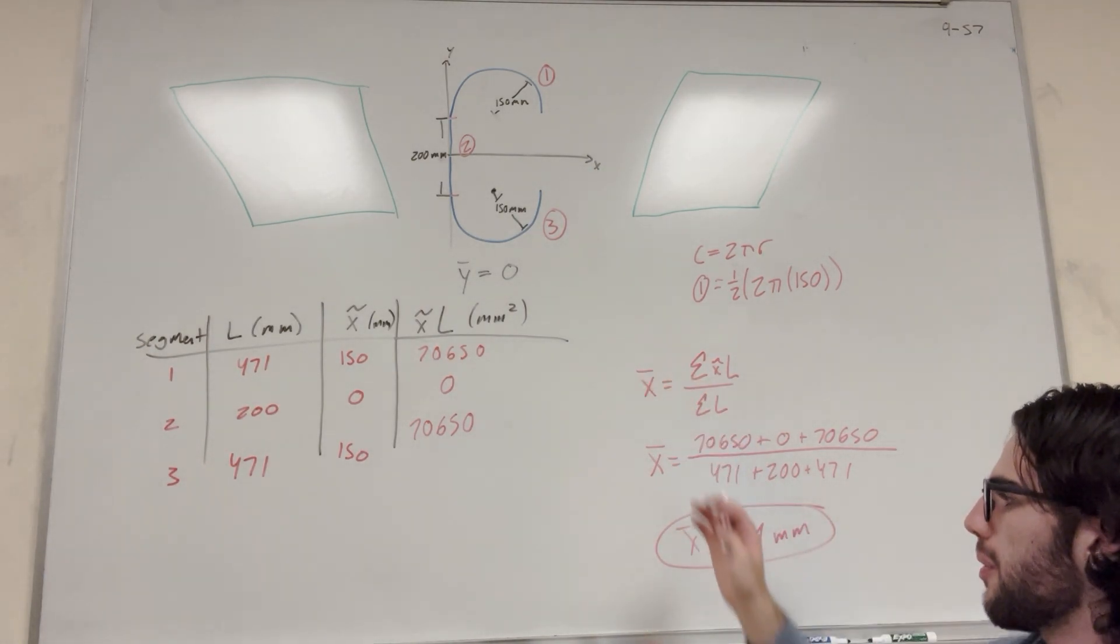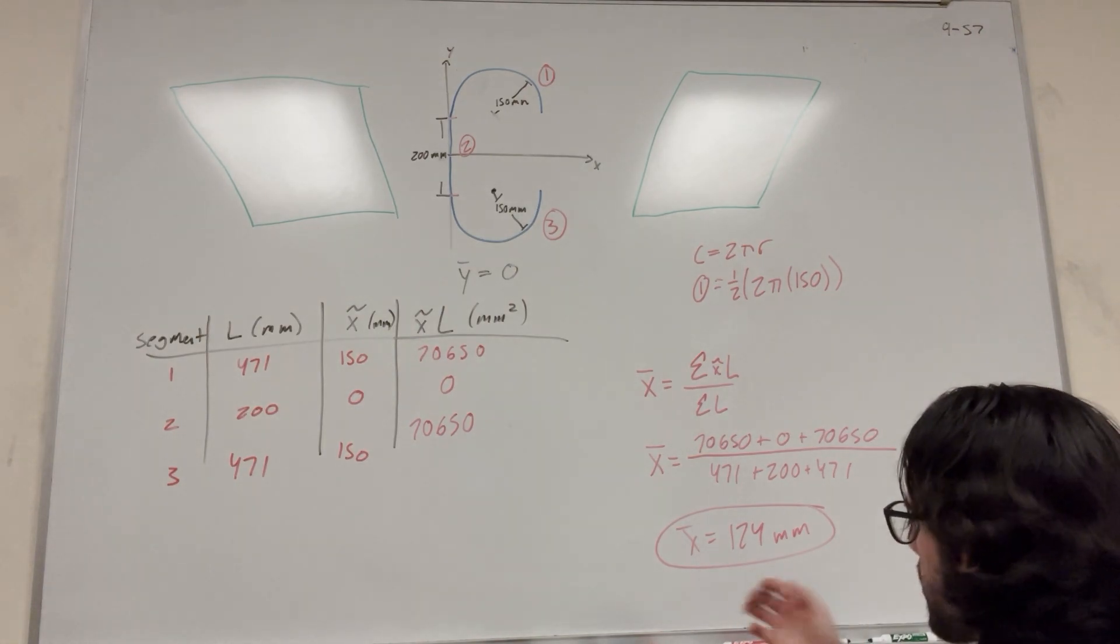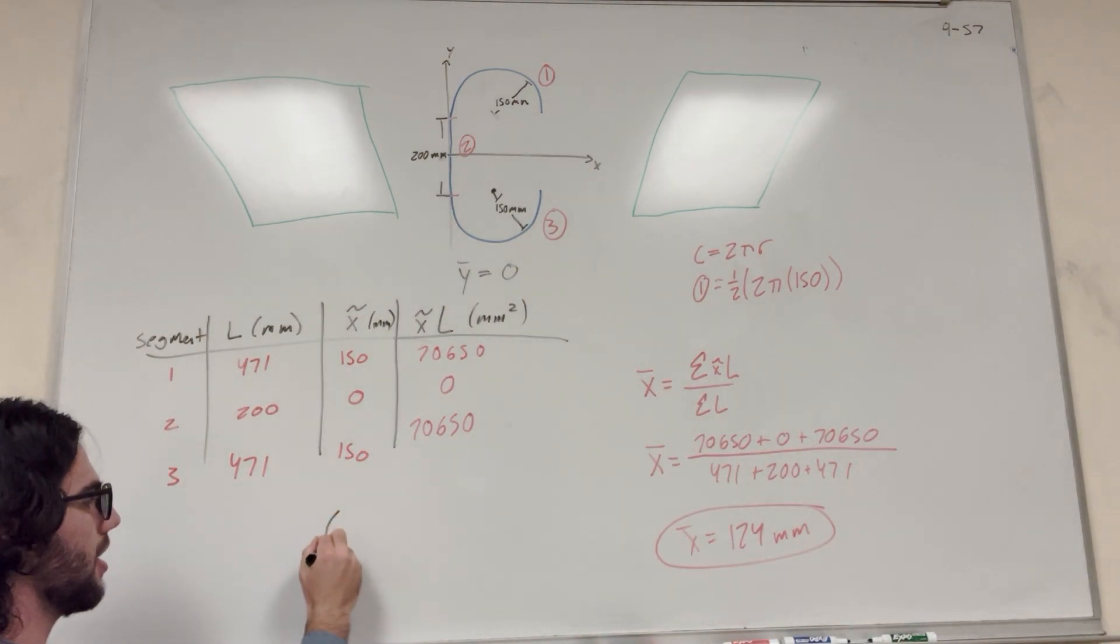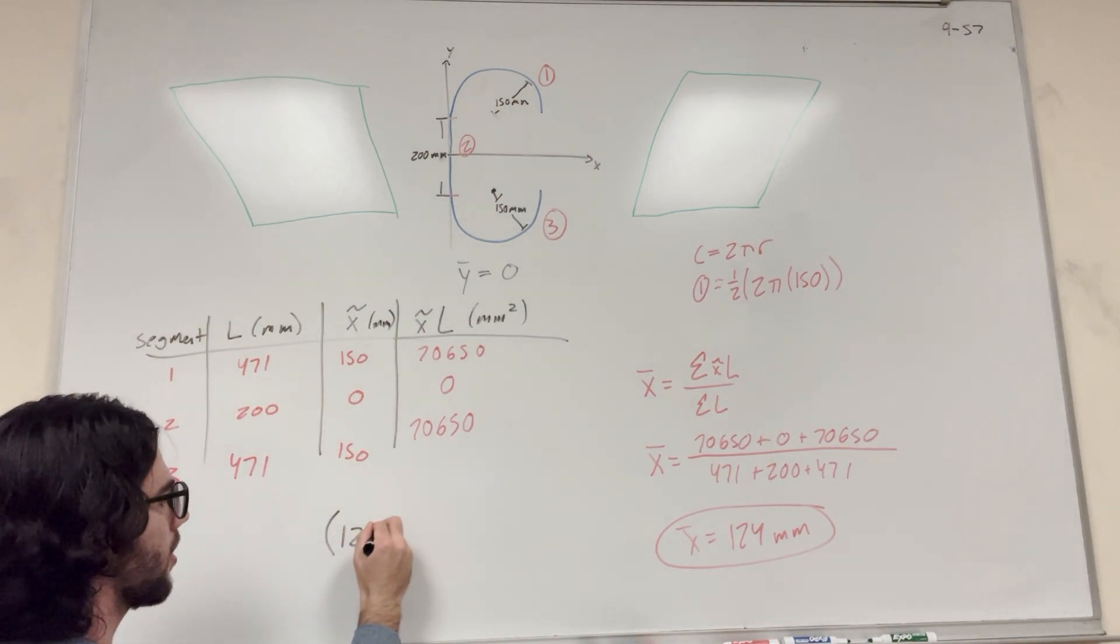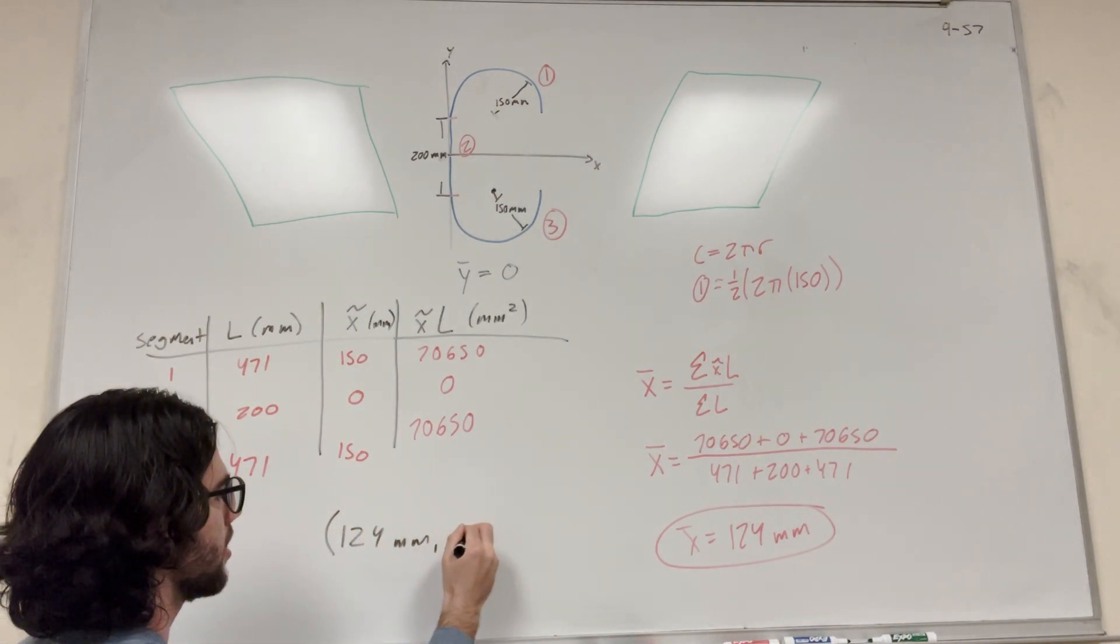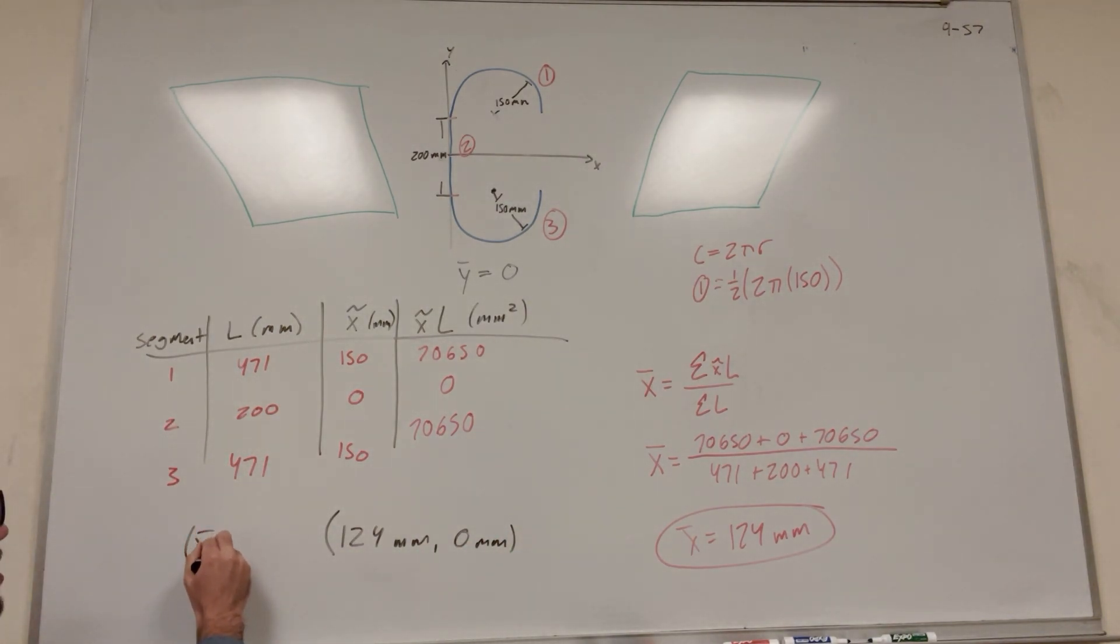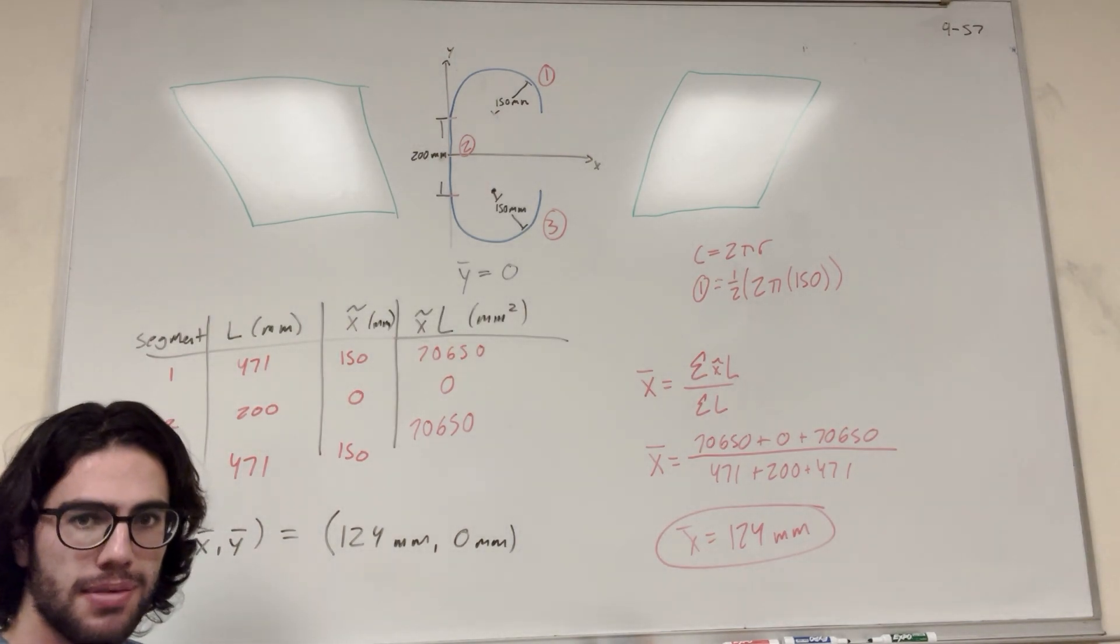So there we go, we have y bar, and we have x bar. Writing this, basically our center is going to be 124 millimeters, 0 millimeters. That would be x bar, y bar. So there you go. However you want to write it, that's your answer. Simple enough.